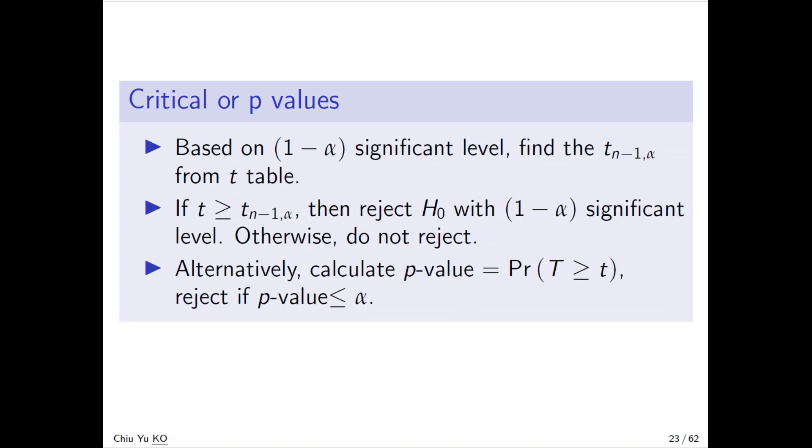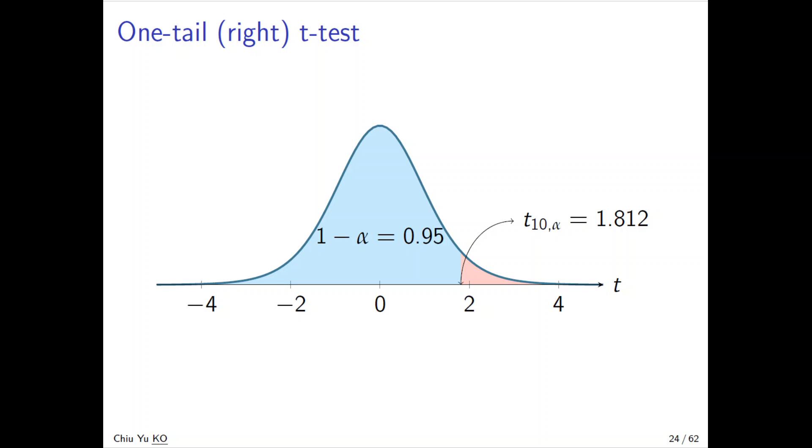Everything we've seen before, but now we replace z_α with t_{n-1,α}. The p-value follows the same idea. Look at the example - the graph shows the rejection region. Look at the red area and the blue area, but now it's no longer 1.64, it's 1.812. If you don't know the population variance, the rejection region is much further. You have more variability, so you have to move a little bit further - before it was 1.64, but now it's 1.812.